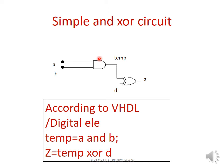Here, this is the AND gate and this is the XOR gate. A and B are the inputs for the AND gate and temp is the output for this AND gate. Temp is the input for this XOR gate, D is another input, and Z is equal to temp XOR D. The equations are: temp = A AND B, and Z = temp XOR D.